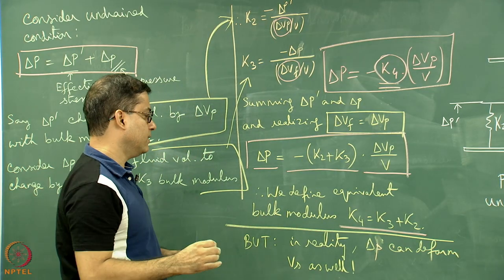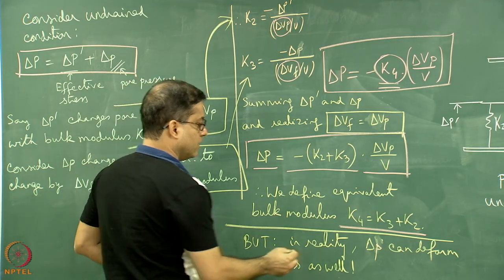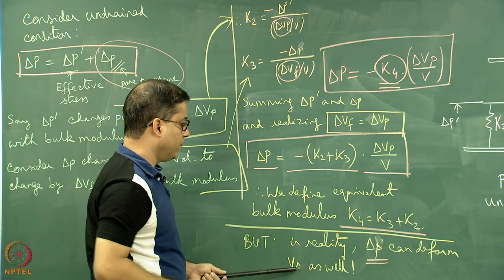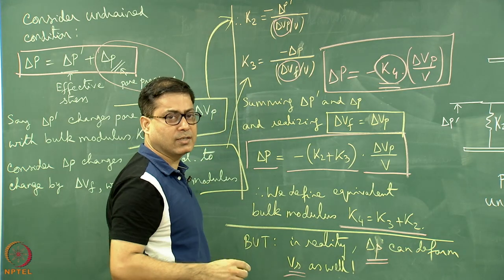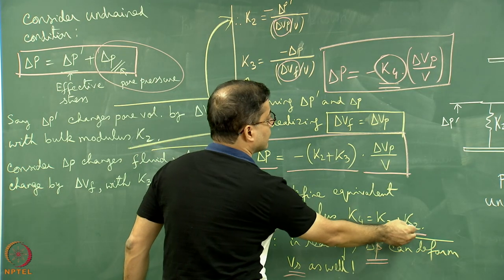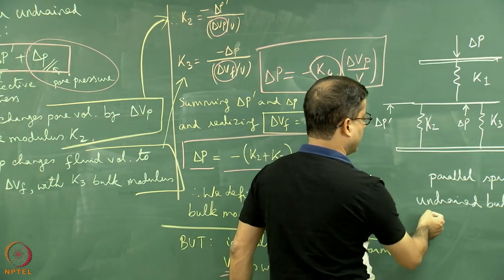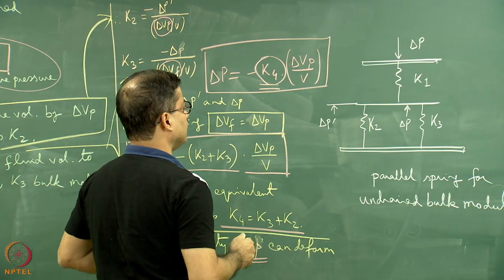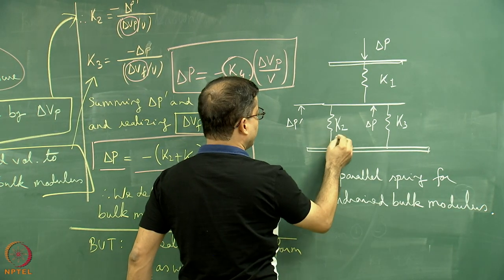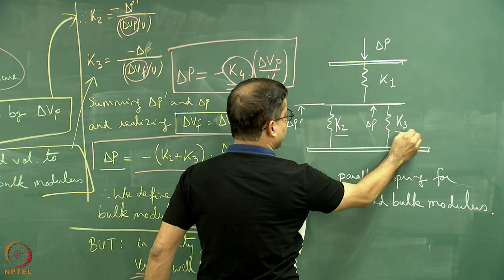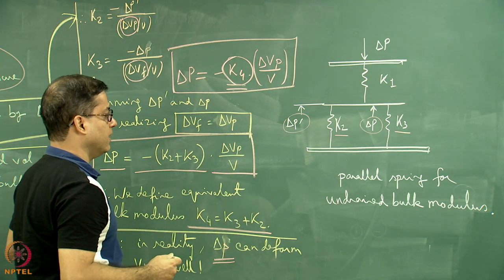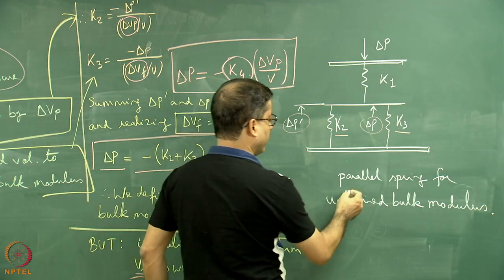However, there is a simplification in this derivation. In reality, the pore pressure delta P can also deform the solid volume Vs, in which case this simple deduction would not hold. With K4 equals K2 plus K3, we can represent the undrained bulk modulus situation as a parallel spring arrangement, where delta P is applied, K2 is assigned to one spring and K3 to another, with delta P' and delta P acting in their respective directions.